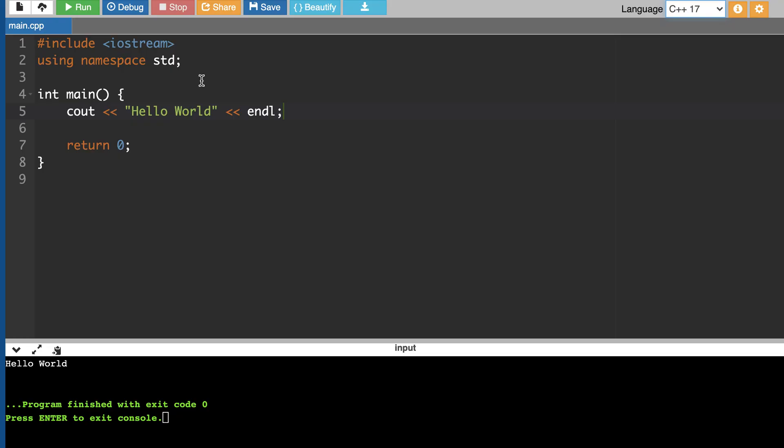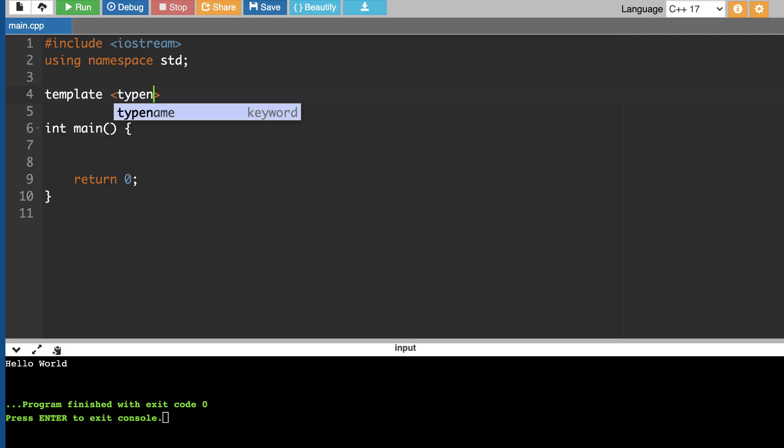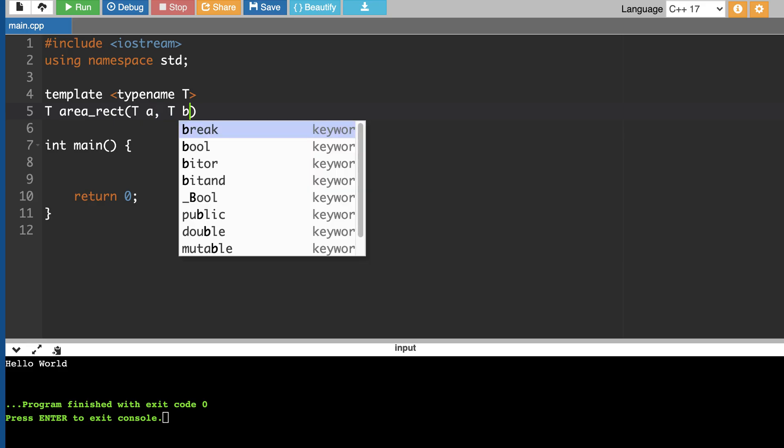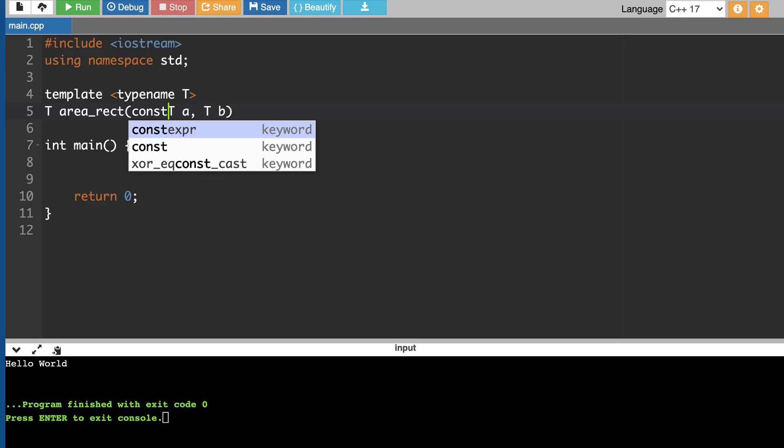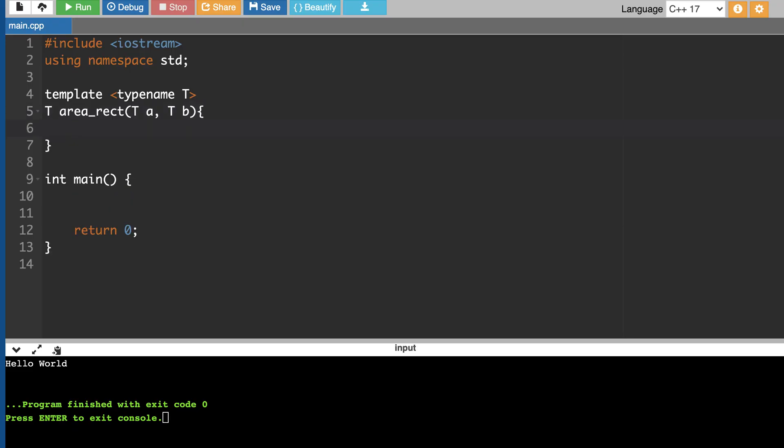So let's see an example. What we will do is get rid of this and then we will define the same area_rect. Or rather these should be const since we are not expected to change it, but for simplicity let's ignore it for now. Then we have T result equal to a multiplied by b.